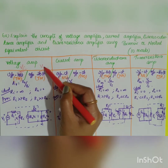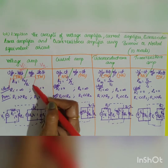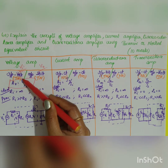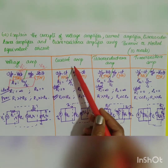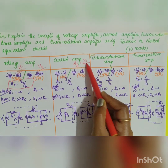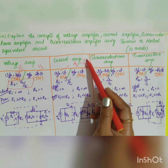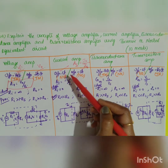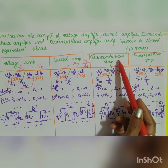For the voltage amplifier, both input voltage vi and output voltage are voltage parameters, so the voltage gain Av is equal to V0 divided by Vi. For the current amplifier, the gain Ai is equal to i0 divided by ii — both input and output parameters are current. Since both parameters are current, both the input and output sides use Norton's equivalent circuit.